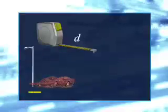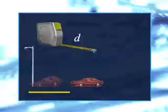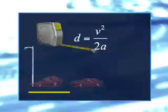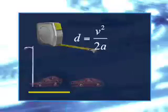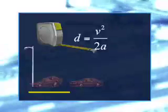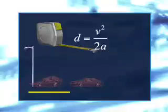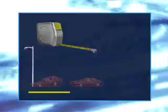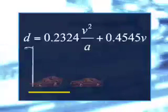Accident investigators have to work backward. They know the braking distance by measuring the skid marks on the road. By measuring the skid marks and using the simplified formula d equals v squared over 2a, they can calculate the speed of the car at the time the brakes were applied. Then, taking these results and using the full formula, the total stopping distance is found.